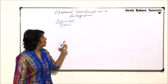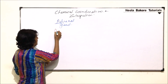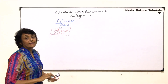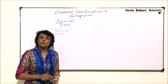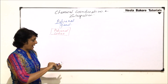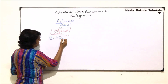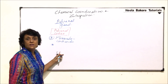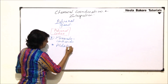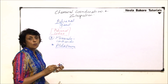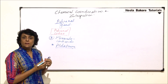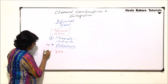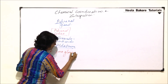We will now start with the hormones of the adrenal cortex. In the adrenal cortex region, we have seen that there are three zones, and these three zones are responsible for producing different types of hormones. The first category is mineralocorticoids, and the most important amongst these is aldosterone. All mineralocorticoids are secreted by zona glomerulosa.